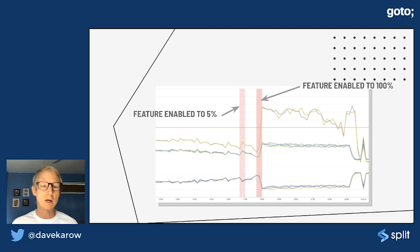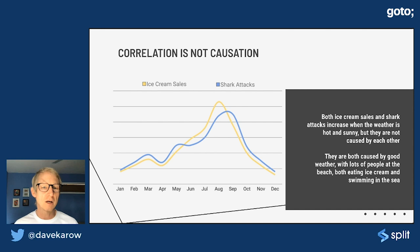So I'm going to briefly cover this one, which is that correlation is not causation. Ice cream sales and shark attacks both peak in the summer, but they're not related to each other. They don't cause each other. We'll come back to that.